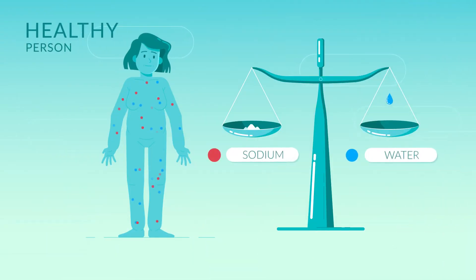In a healthy person, there is just the right amount of sodium and water in the body. The brain and kidneys maintaining this balance is a process called homeostasis.